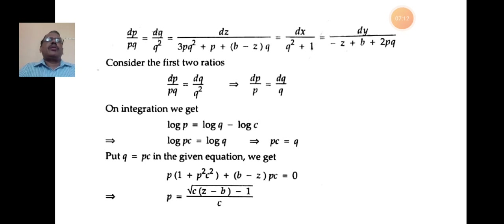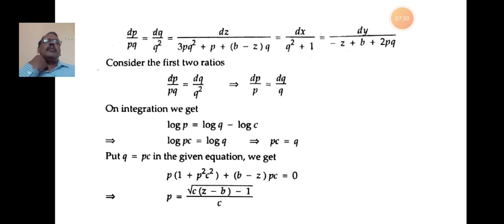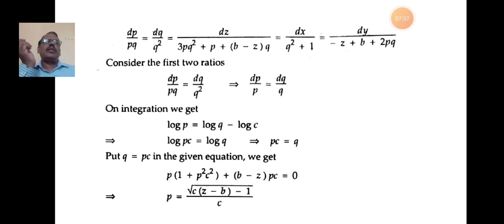Consider the first two terms: dp/(pq) = dq/(q²). Cancelling q, we get dp/p = dq/q. Integrating: log p = log q − log c, so log(pc) = log q, giving q = pc.